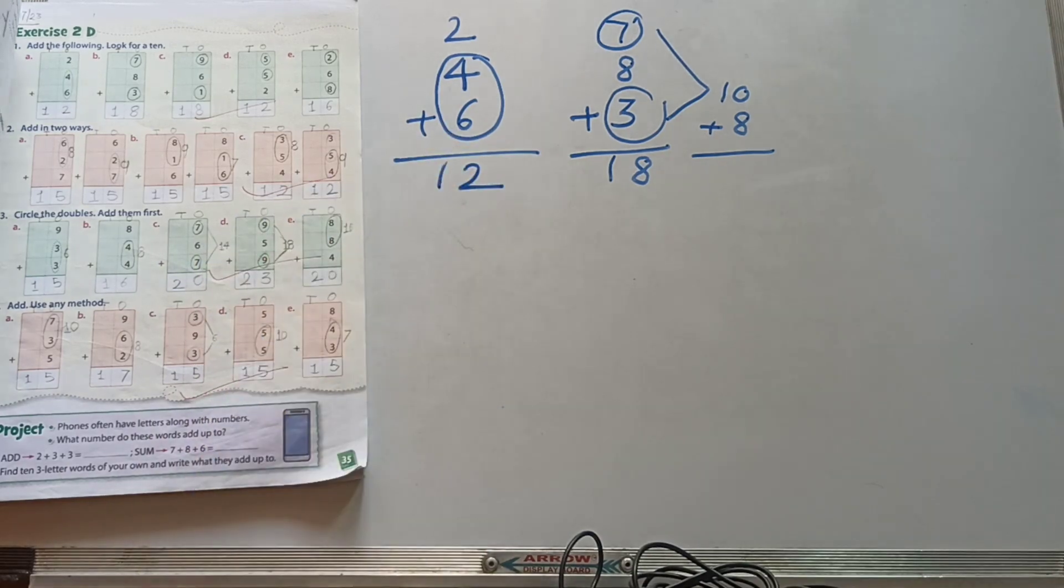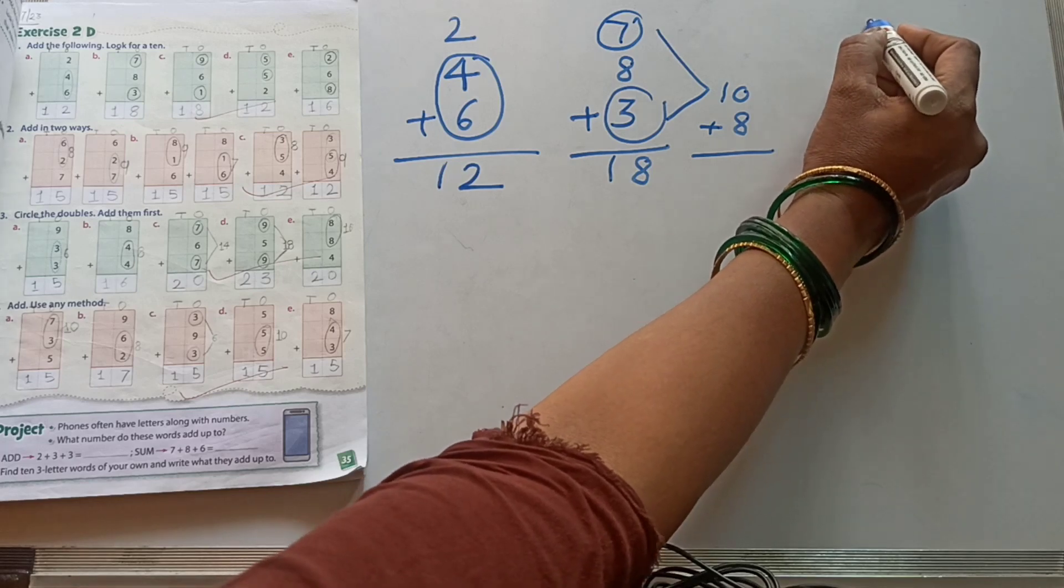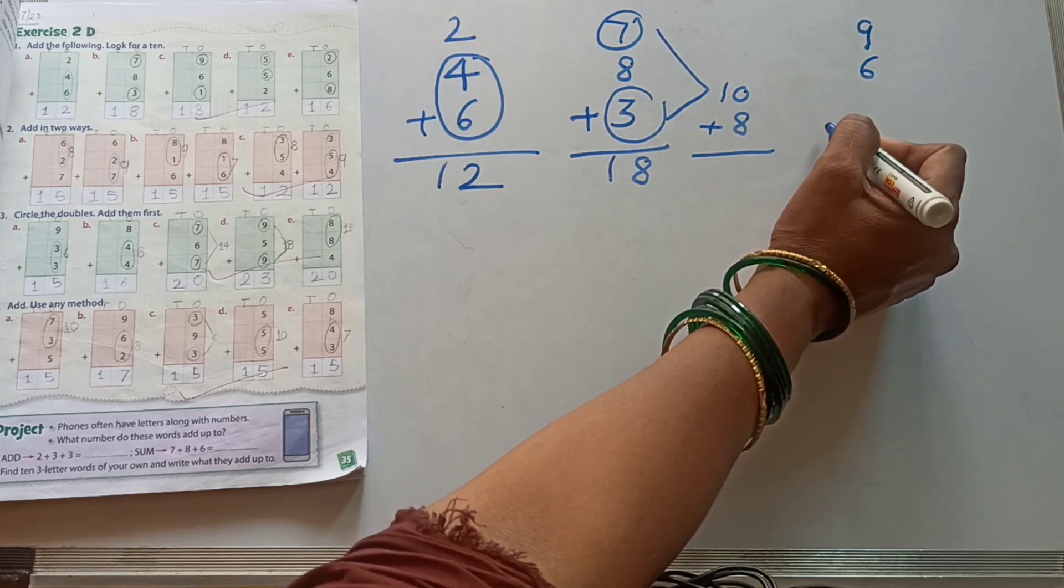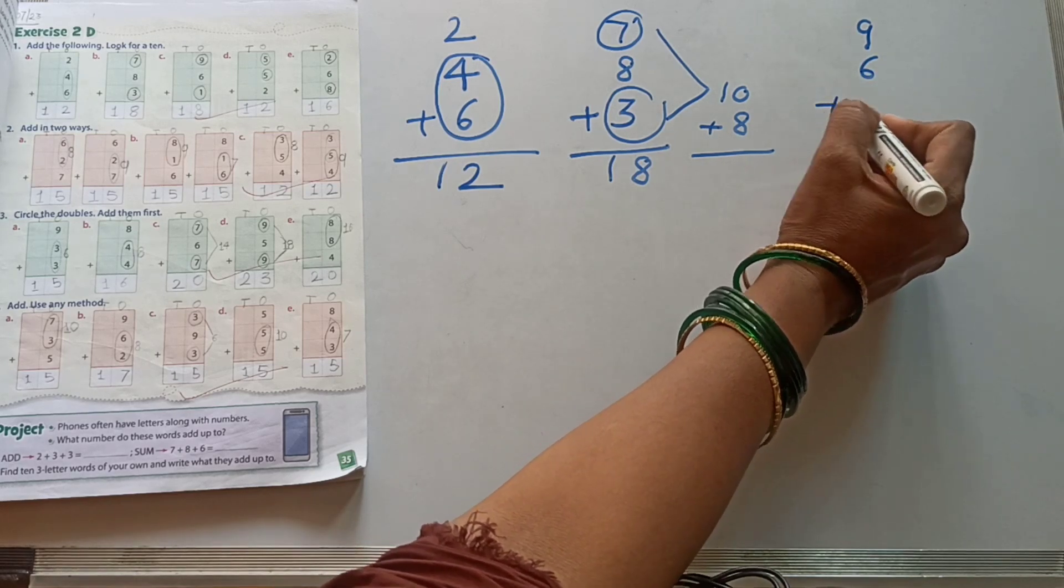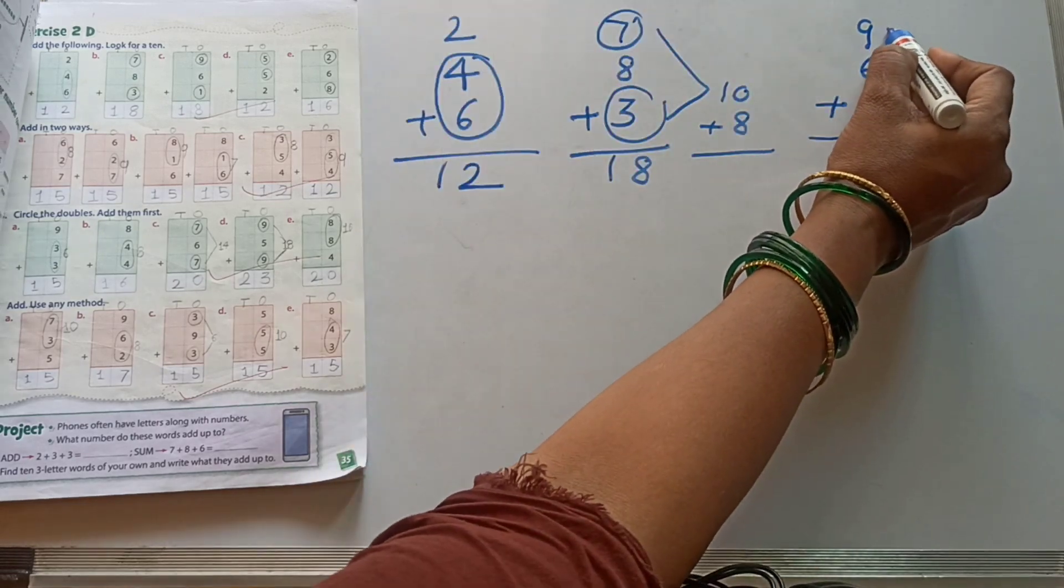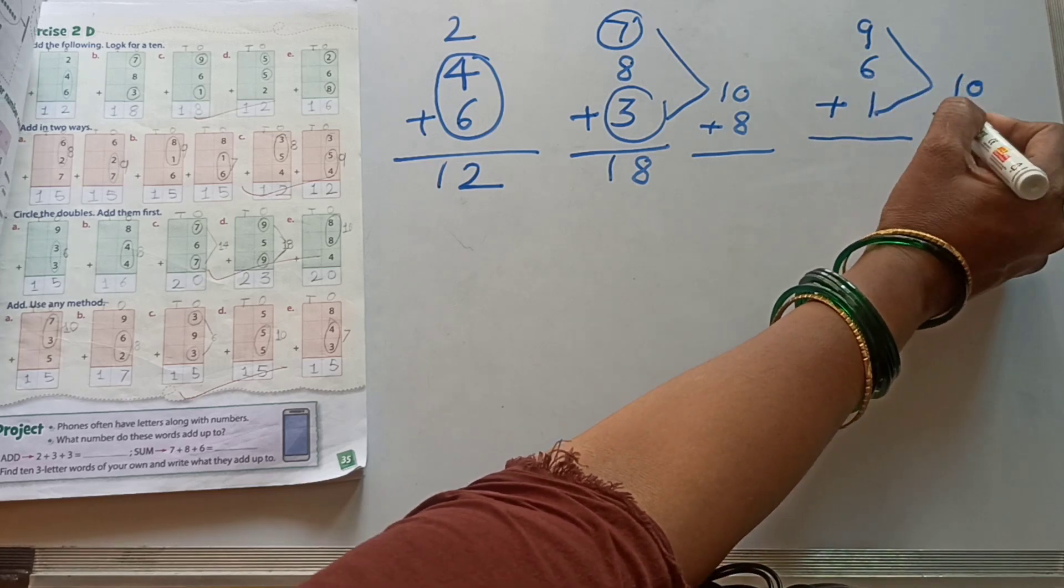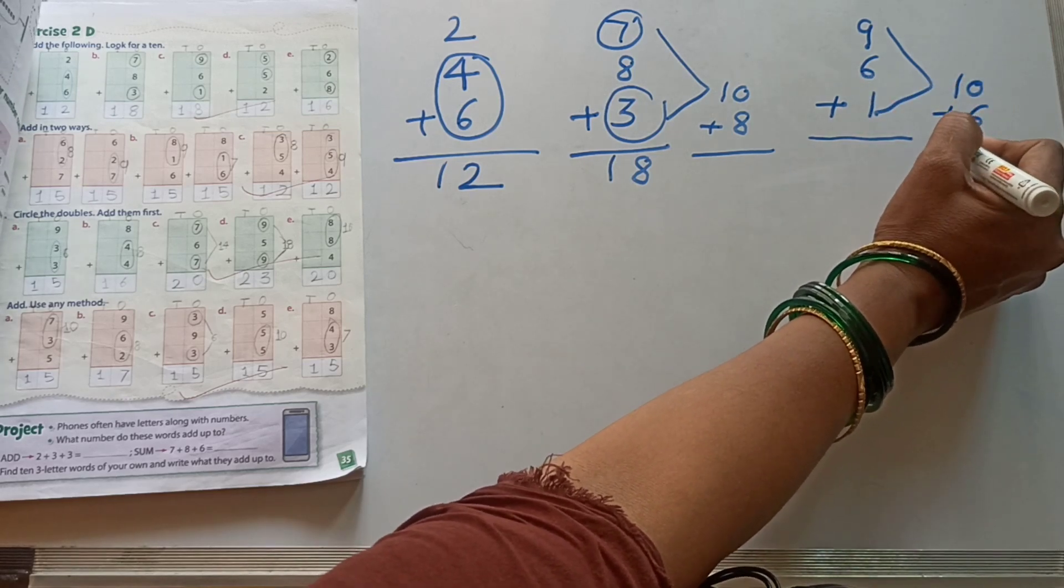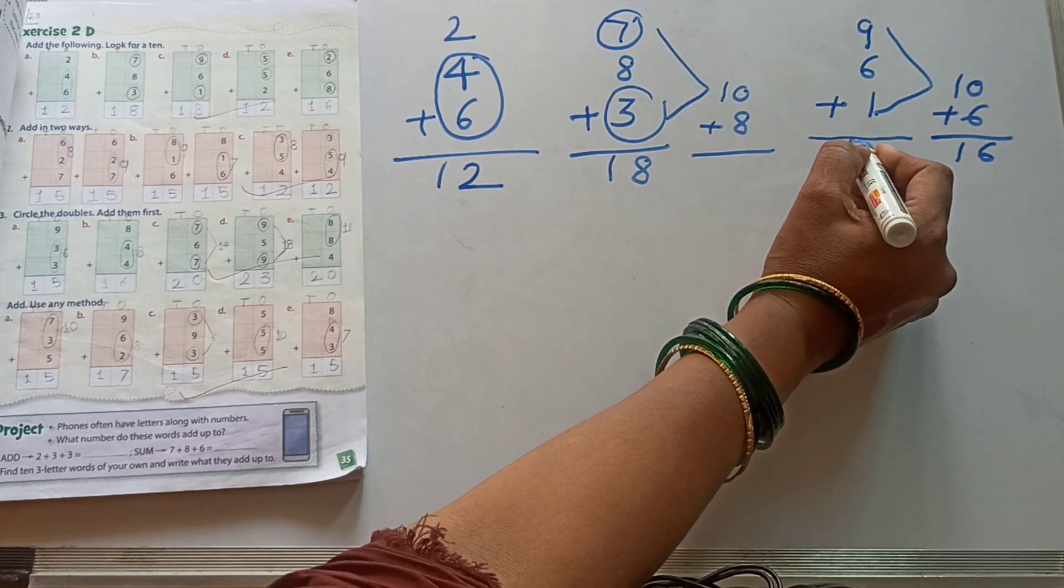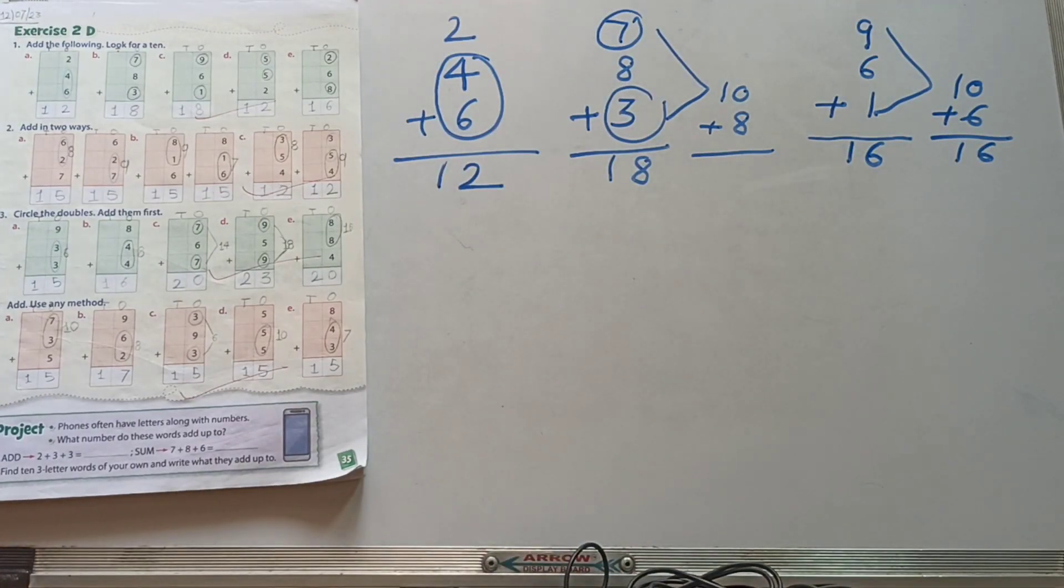Then next, 9 plus 6 plus 1. This one, 9 plus 1, 10. 10 plus this one, 6. 6 and this one, 1. Our answer, 1, 6, 16.